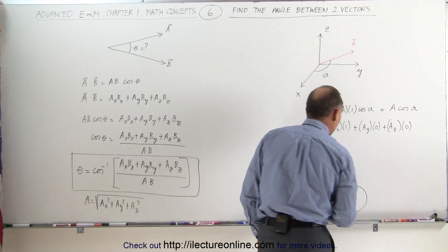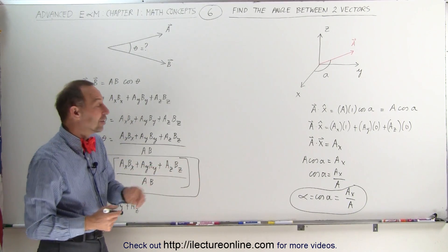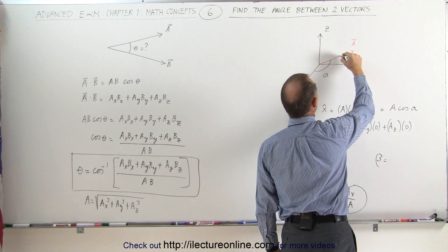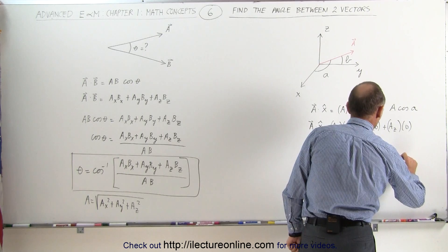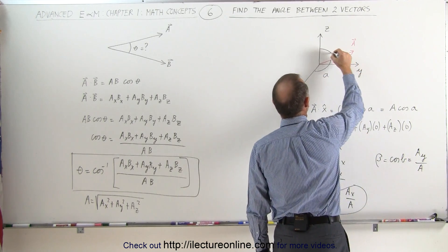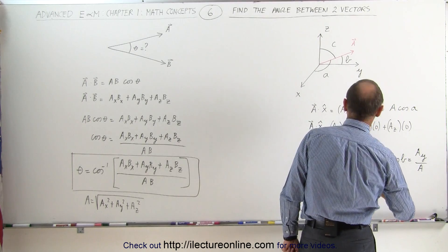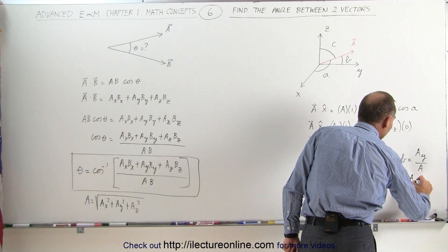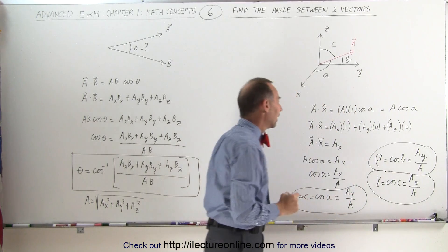In other words, it's equal to the magnitude of the x-component divided by the magnitude of the vector. We can do the same for the y-direction and the z-direction. Beta — the direction cosine between the vector and the y-axis — is equal to cos(B), which equals A_y divided by |A|. And gamma — the direction cosine relative to the z-axis — is equal to cos(C), which equals A_z divided by |A|. Those are the other two direction cosines, found in the exact same fashion as for the x-direction.